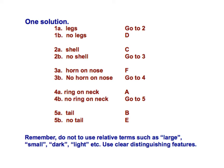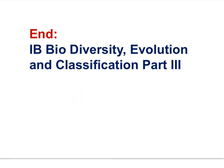Here is my dichotomous key from figure one on the previous slide. Other keys are possible — yours does not have to be identical, but your key should not have vague terms such as large, small, dark, light, smooth, rough, etc. That brings us to the end of IB Biodiversity Evolution and Classification Part 3. In Part 4, we will look more carefully at the characteristics of the plant and animal groups required by the IB syllabus.